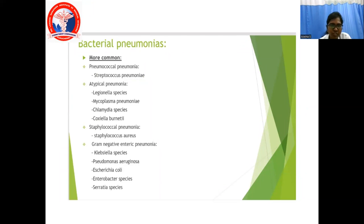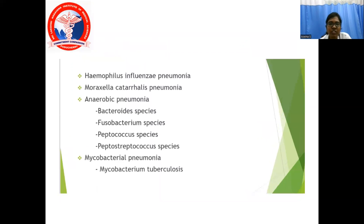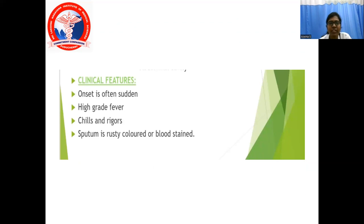Bacterial pneumonia is most commonly caused by Streptococcus pneumoniae — pneumococcal pneumonia. Atypical pneumonia is caused by Legionella species, Mycoplasma pneumoniae, Chlamydia species, and Coxiella burnetii. Staphylococcal pneumonia is due to Staphylococcus aureus. Gram-negative enteric pneumonia is due to Klebsiella species, Pseudomonas aeruginosa, E. coli, Enterobacter species, Serratia species. Others include Haemophilus influenzae and Moraxella catarrhalis. Anaerobic pneumonia is caused by Bacteroides species, Fusobacterium species, Peptococcus, and Peptostreptococcus species. Mycobacterium pneumonia can be caused by Mycobacterium tuberculosis. The clinical features of bacterial pneumonia include sudden onset, high-grade fever, chills and rigors, and rusty or blood-stained sputum.